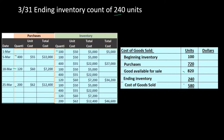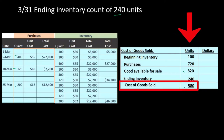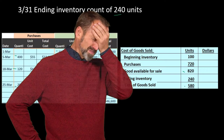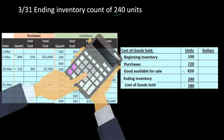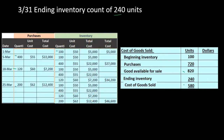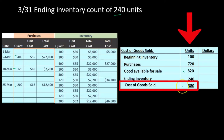This is part of the problem with the periodic system. In a perpetual system it's easier to figure out how much might be due to shrinkage, theft, or other loss versus actual sales. With the periodic system, we hope most of it was sales and that theft or loss is not significantly high — in other words, it would be immaterial to decision making.